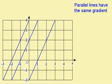Another thing we need to remember is that parallel lines always have the same gradient. Looking at these parallel lines, the gradient of this one is across one up 2, so the gradient is 2. This one is also 2, and this one is also 2.